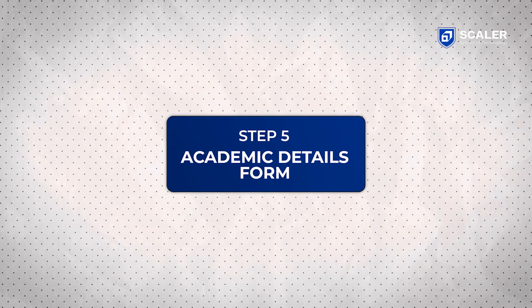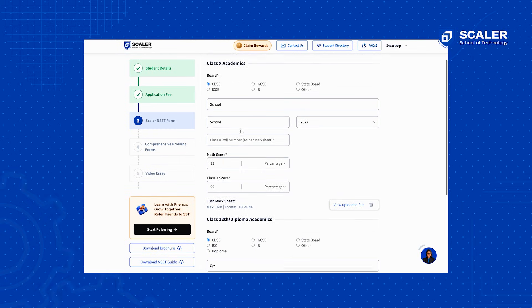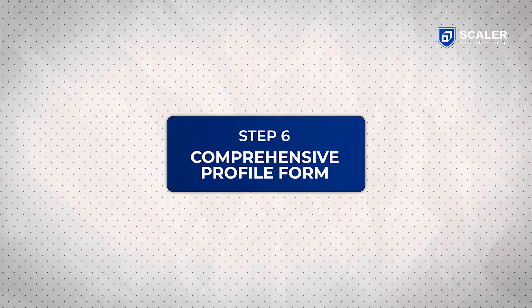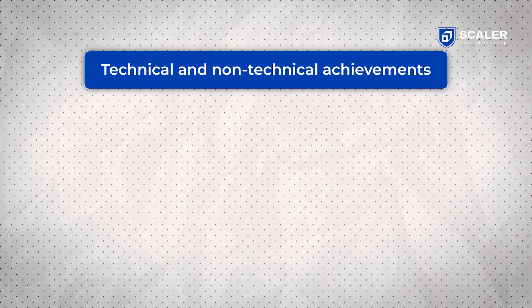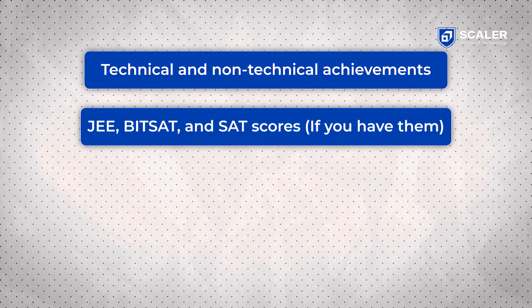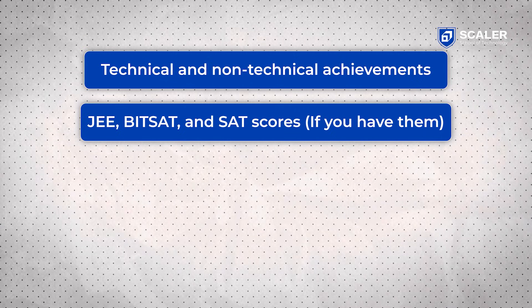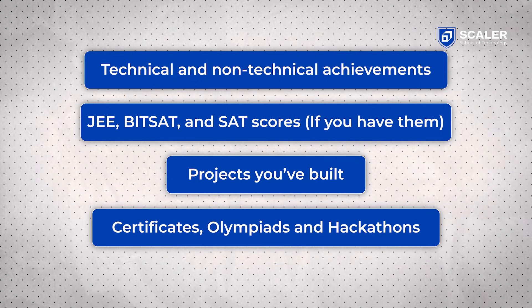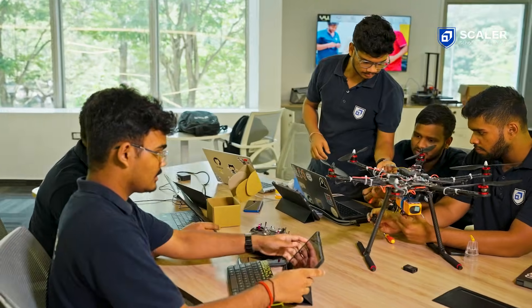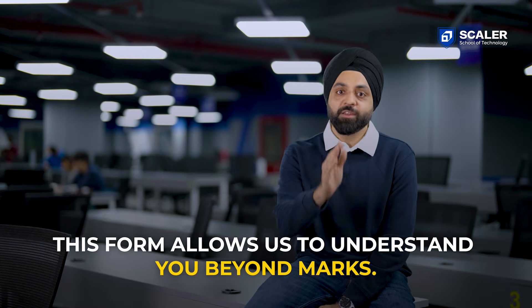In the next step, we will ask for your academic details — your class 10th marks and class 12th marks. Don't worry, if you don't have your class 12th marks, you can always update it later. The next step is the comprehensive profiling form. This is super important, so please do not rush it. At SST, we believe in holistic evaluation and ask you everything from your technical and non-technical achievements, your scores in exams like JEE, BITSAT, and SAT if you have them, the kind of projects you have built, certificates, any participation in Olympiads, hackathons, or any initiatives that show curiosity or effort. This form allows us to understand you beyond marks.